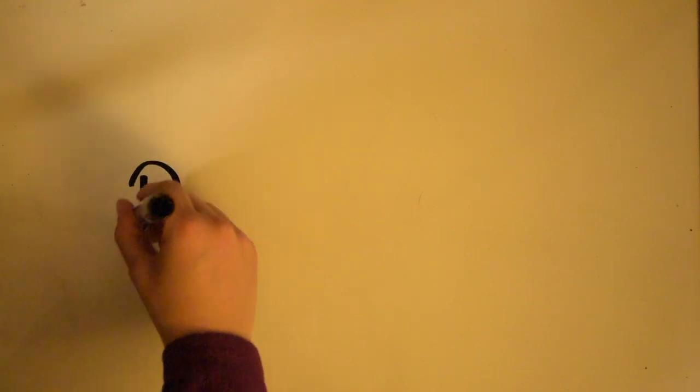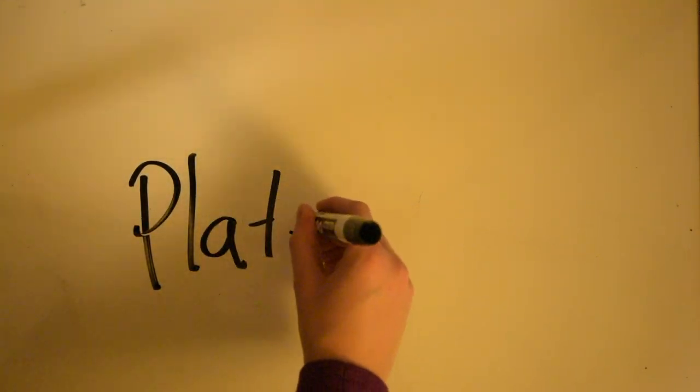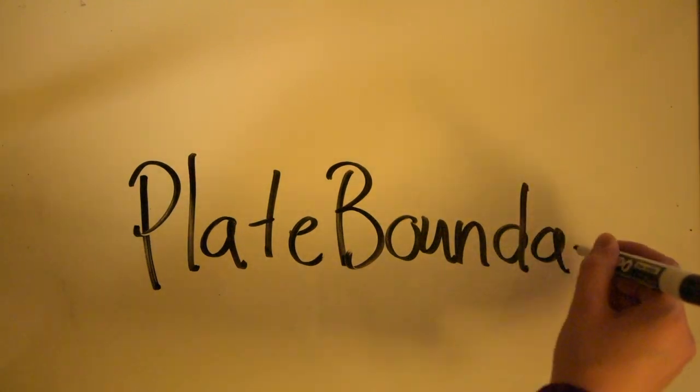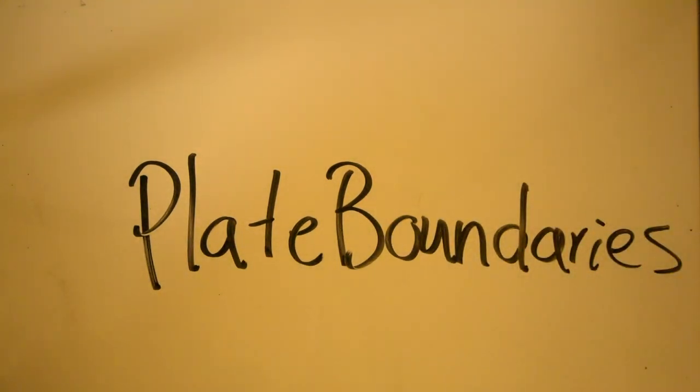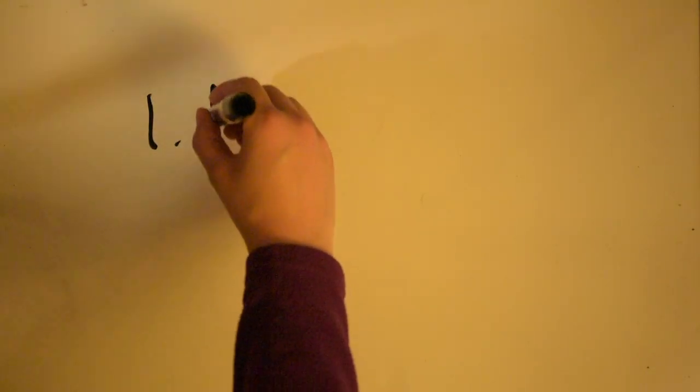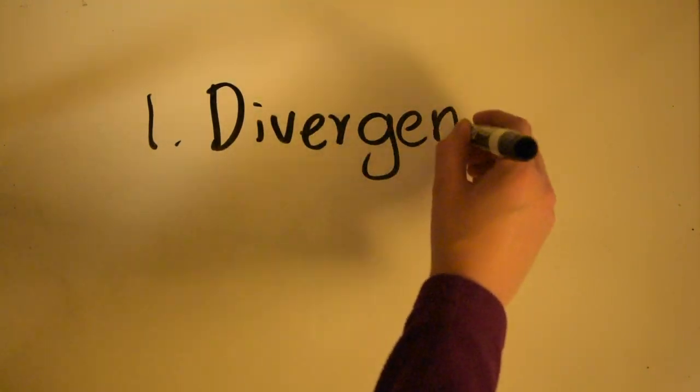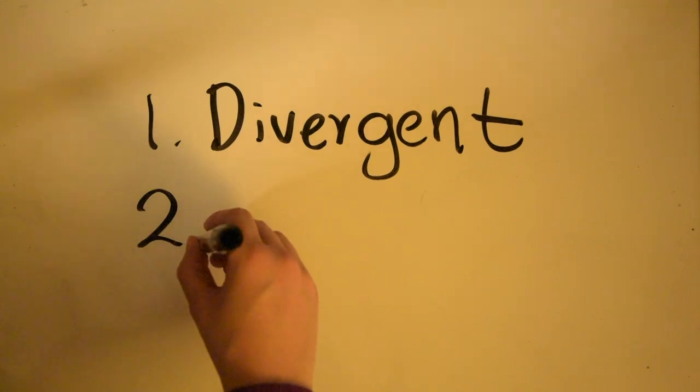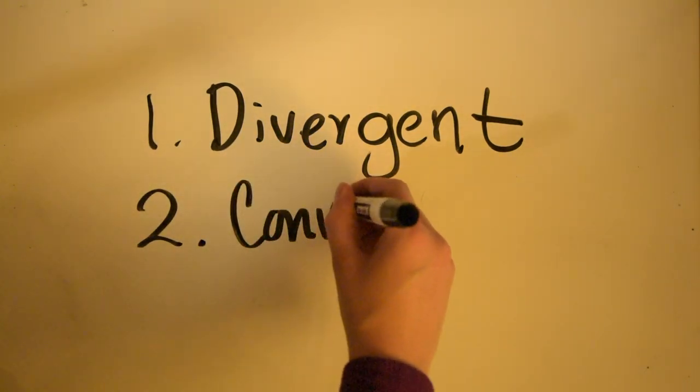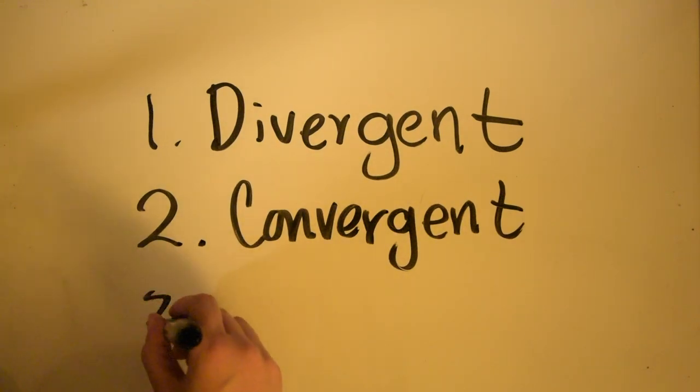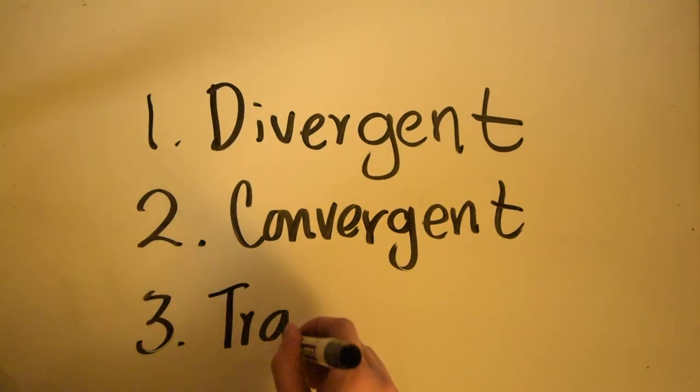There are three different types of plate boundaries that we're going to learn about today. The first is a divergent plate boundary, the second is a convergent, and the third is a transform.